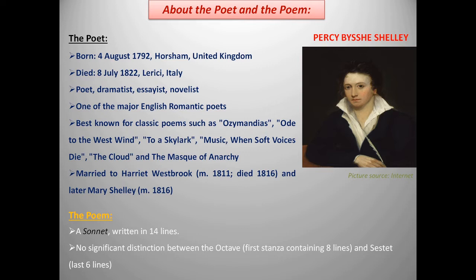He was married to Harriet Westbrook first and later to Mary Shelley, who was famous for her gothic novel Frankenstein. The poem Ozymandias of Egypt is written in 14 lines and is known as a sonnet. But this sonnet has no significant distinction between the octave, the first stanza containing 8 lines, and the sestet, the last 6 lines. So, let's start today's poem, Ozymandias of Egypt.